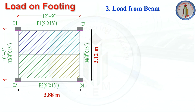Next, we calculate the load from the roof beam. Since there are no floors above, only the self-weight of the beam acts. For column C1, half the self-weight of beam B1 and half the self-weight of beam B3 will be transferred to C1. We need to calculate these two self-weights.